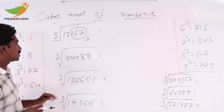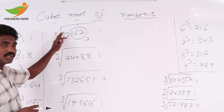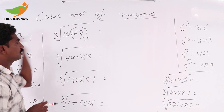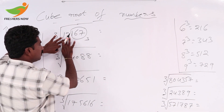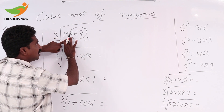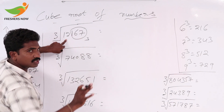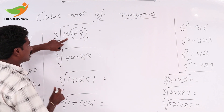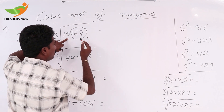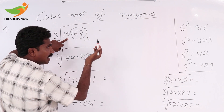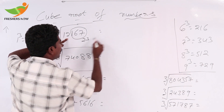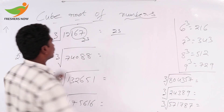12 is there. 2 cube is 8, 3 cube is 27. 2 cube, 8, is less than 12; 3 cube, 27, is greater than 12. So we can take 2 cube, meaning we take 2.